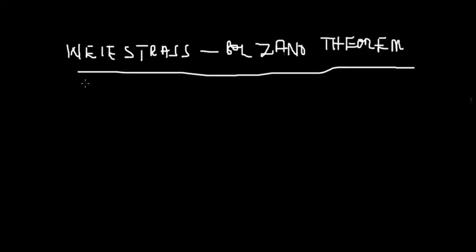Now let's look at the Bolzano-Weierstrass theorem. The Bolzano-Weierstrass theorem is all about combining bounds with limit points — we are trying to combine bounds and limit points into one concept. These are two mathematicians: Weierstrass and Bolzano.